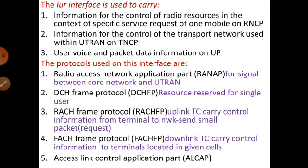Third will be RACH Frame Protocol. This is an uplink protocol that transports and carries protocol information between the terminals along with the network. This type of protocol is used to send small packets, not huge packets. FACH Frame Protocol performs downlink activity and carries control information directly to the terminals located within the cells. Fifth is ALCAP, which is mainly used to set up the transport bearer, and this bearer is used to carry the user and control plane information.